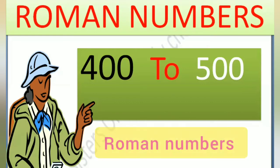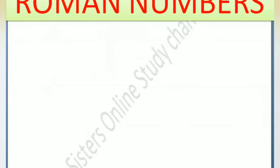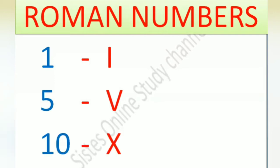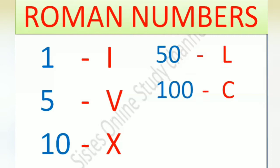Roman numbers: 1 = I, 5 = V, 10 = X, 50 = L, 100 = C, 500 = D.